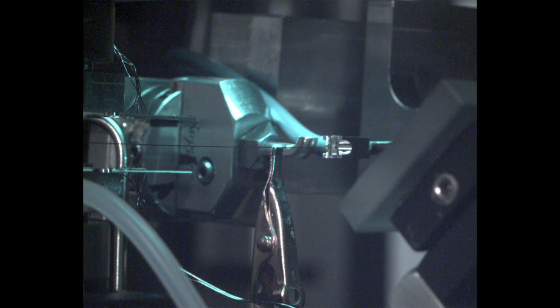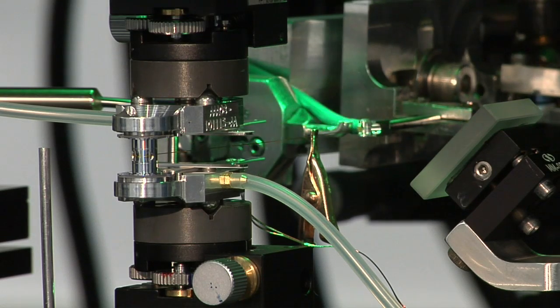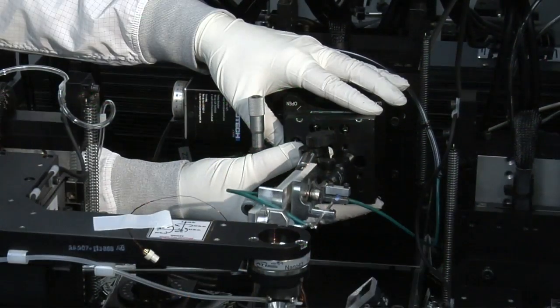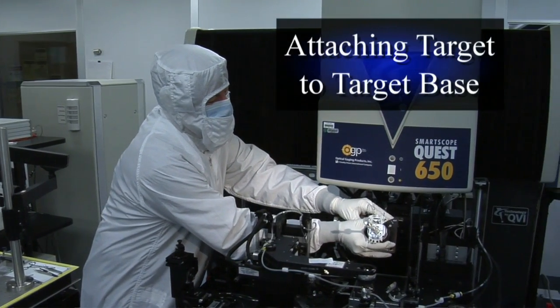The free end of the capsule fill tube is grabbed by a manipulator. The capsule transfer tooling can now be removed. The target base is mounted to the machine.